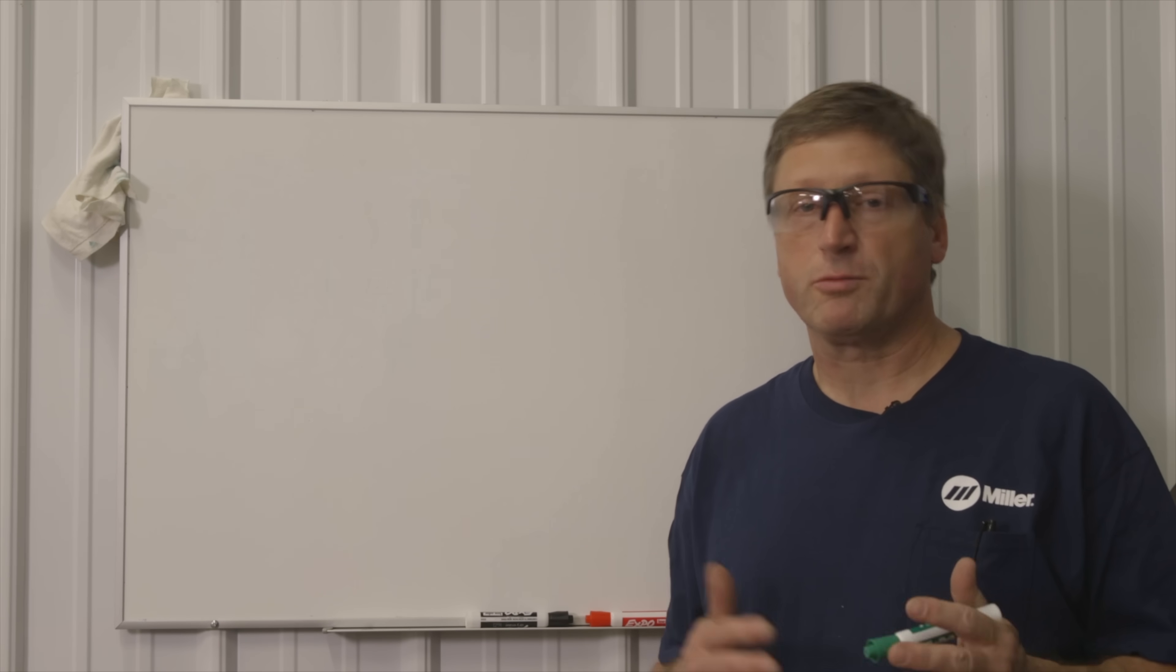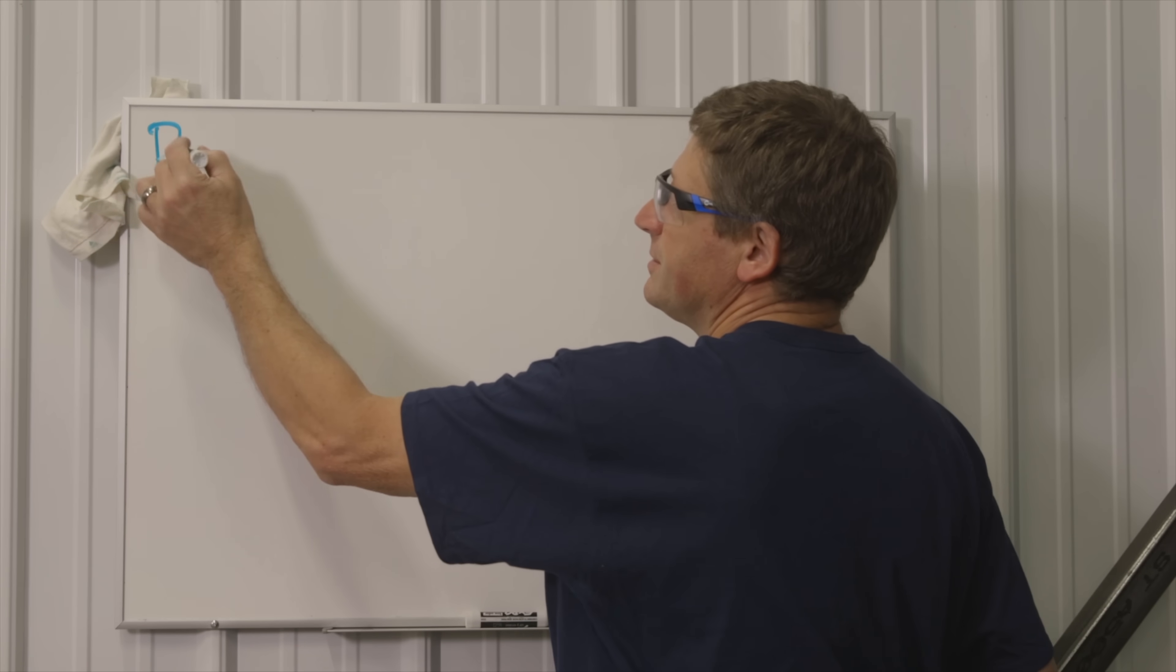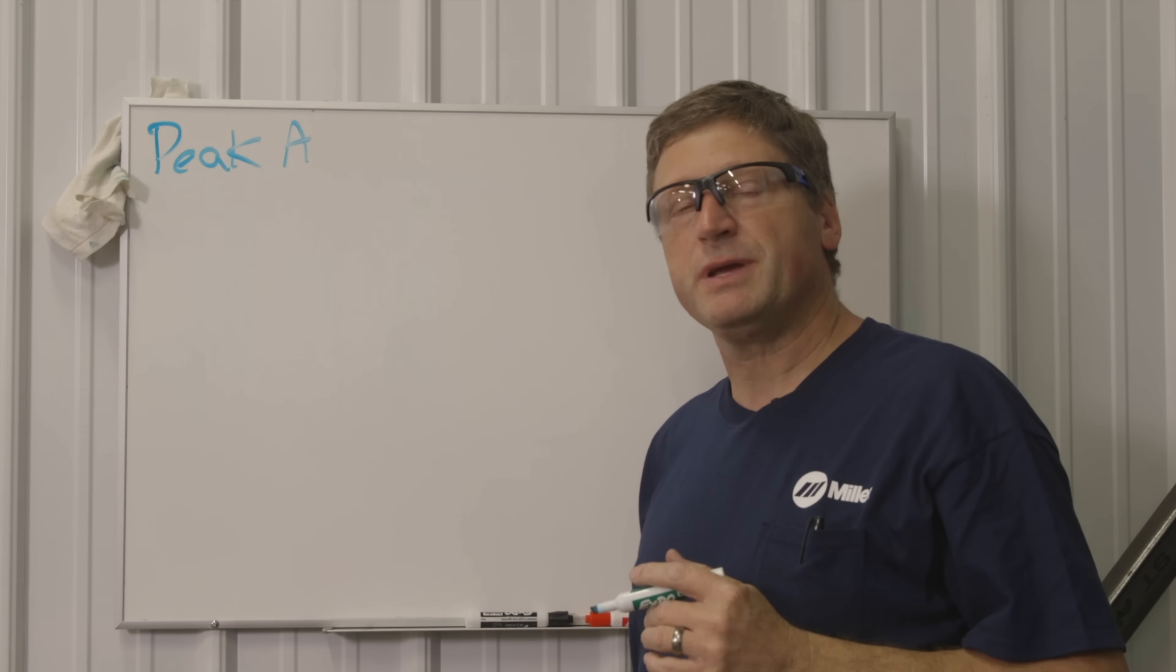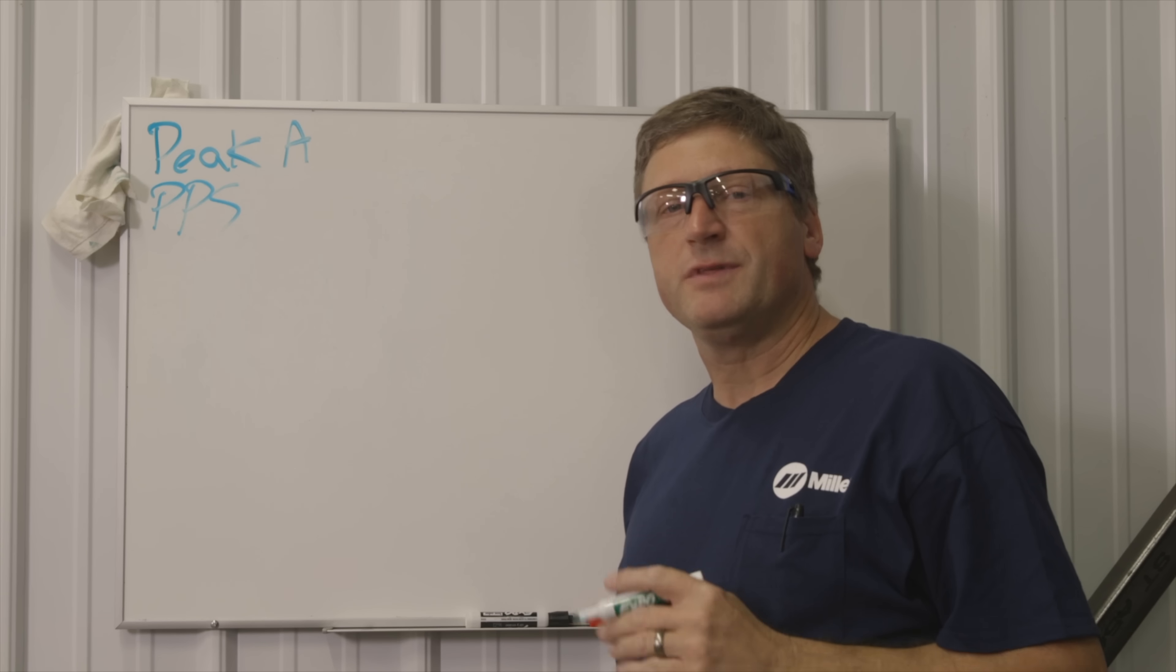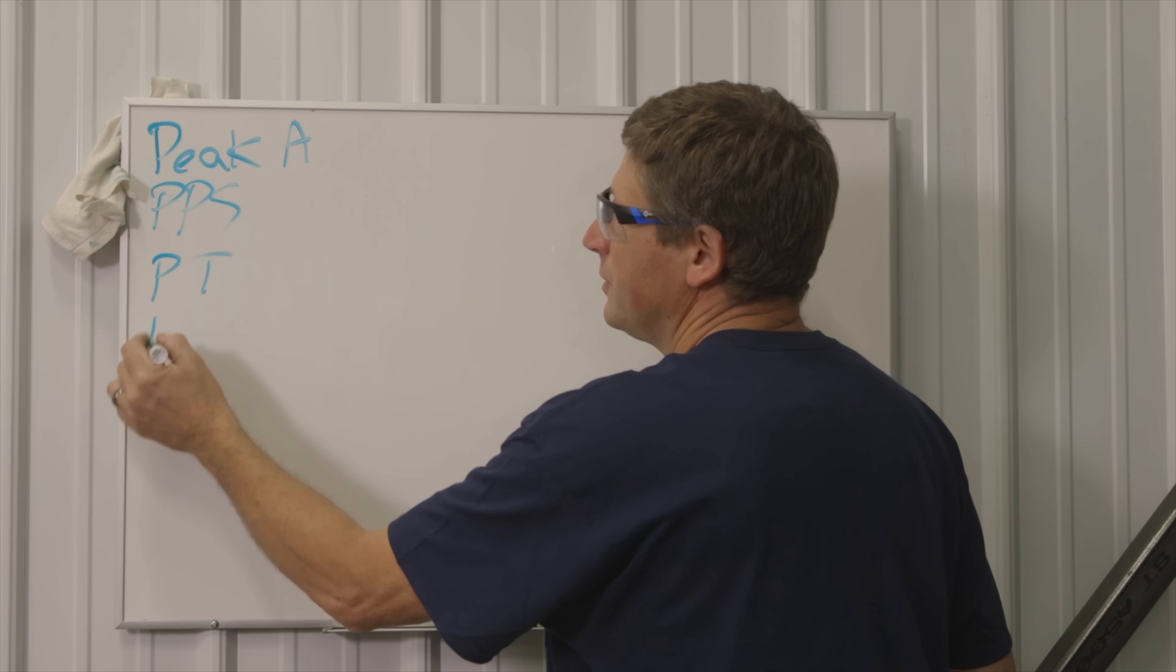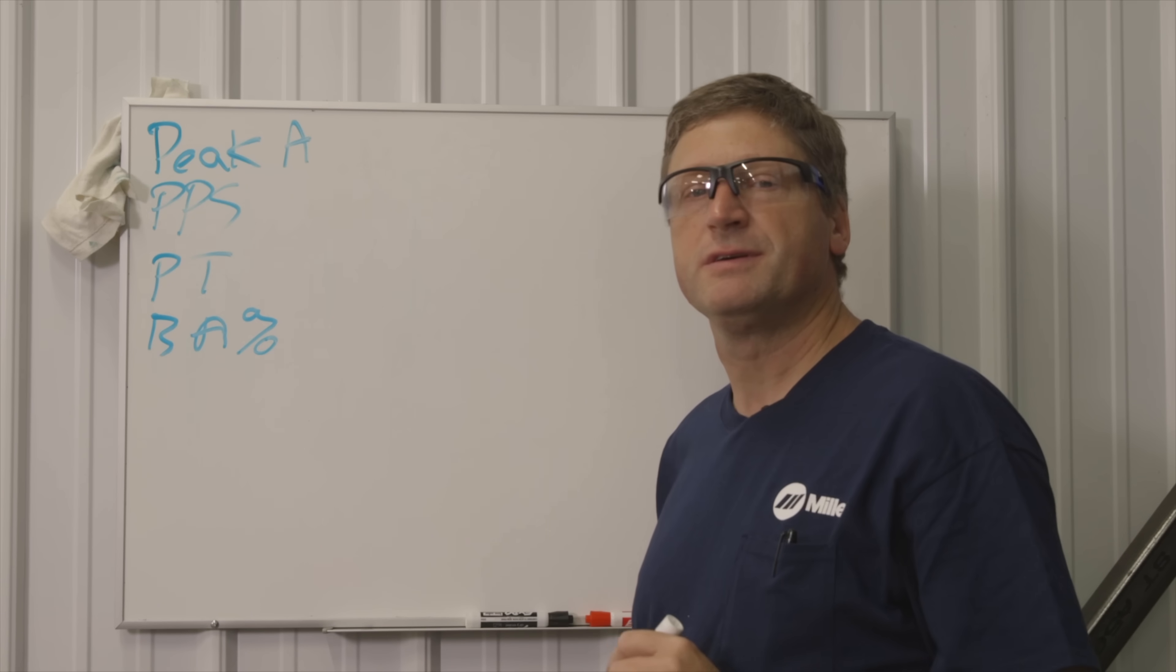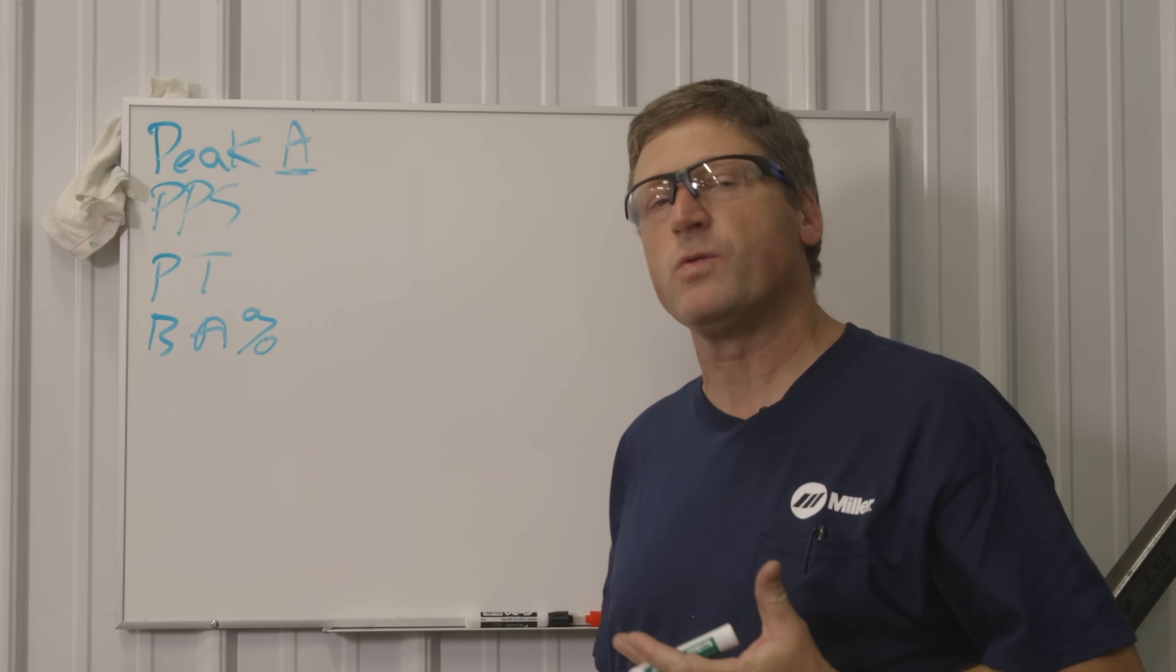Typically with the more professional TIG machines there's going to be four parameters you're adjusting when you're in the Pulse mode. The first one is going to be your peak amperage. The next one is pulses per second abbreviated PPS. The next adjustment is your peak time and the last adjustment is your background amperage, usually expressed in a percentage. It's going to be a percentage of your peak amperage or whatever you're welding with.